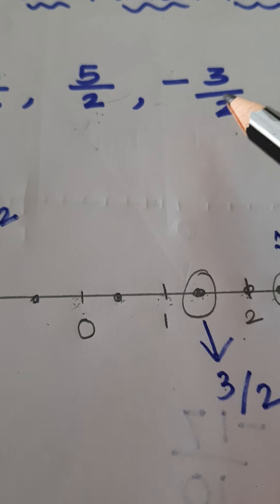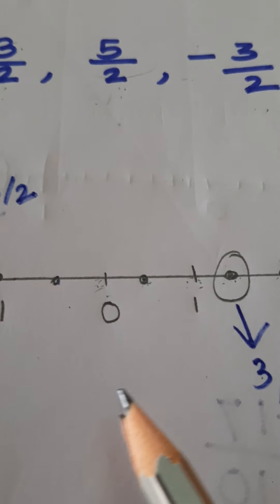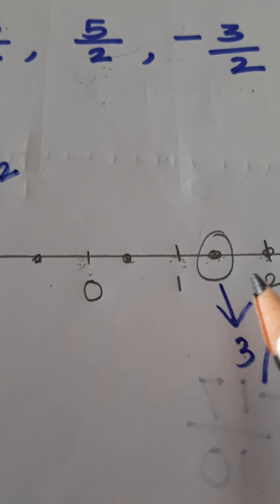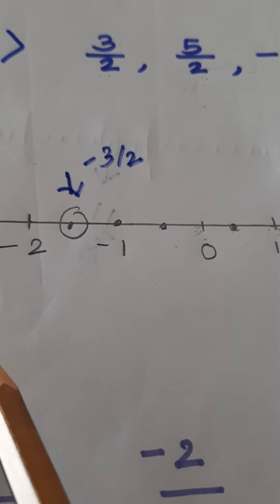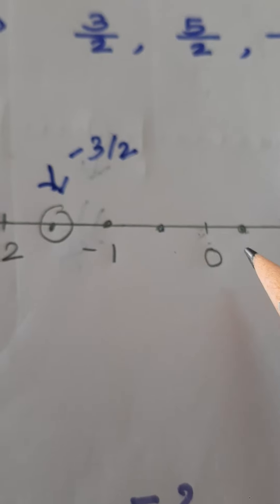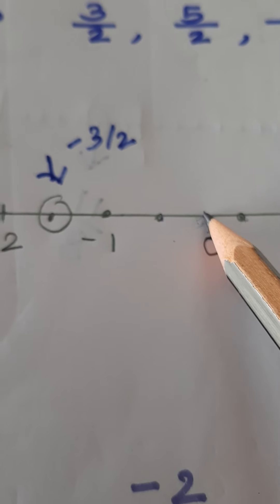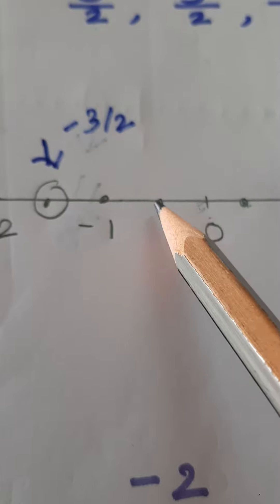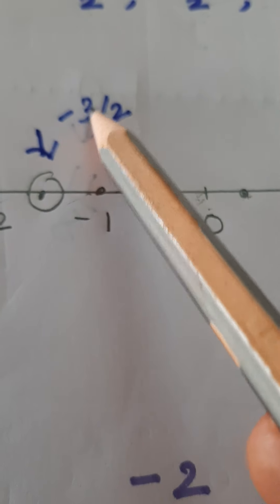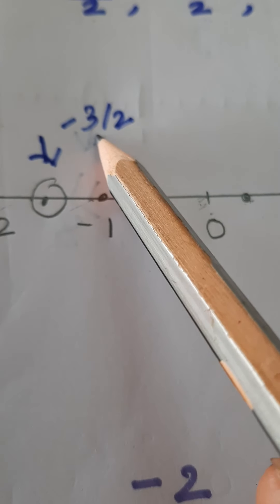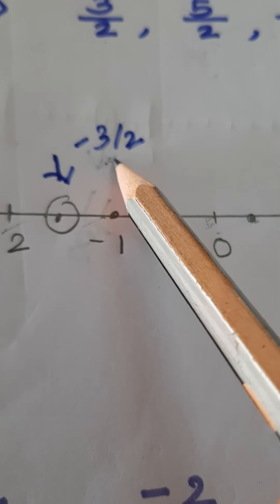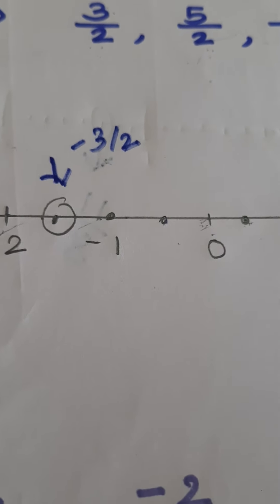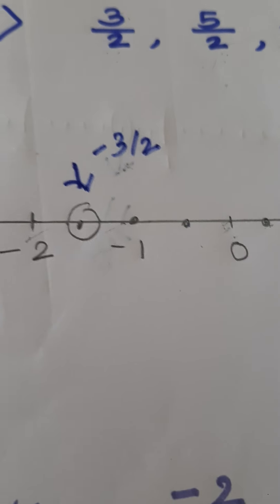Now we are to show negative 3 upon 2. To the right side of 0, all positive numbers are there, and to the left side of 0, all negative numbers are there. After 0, go to the left side and count the third part: 1, 2, and 3. So here you show negative 3 upon 2. Only remember what the denominator is and make equal parts from 0 to 1, 1 to 2, 2 to 3 and so on.